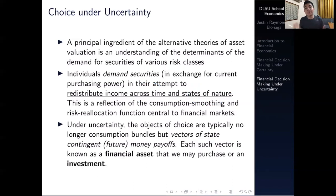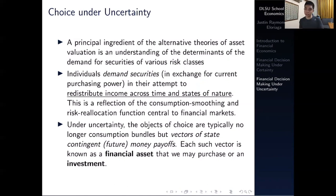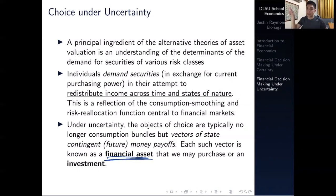Under uncertainty, the objects of choice are typically no longer consumption bundles as we had under certainty — consumption streams across different periods. In reality, they're vectors of state-contingent future money payoffs. Each vector is a financial asset we may purchase, and the vector represents the different potential outcomes of that investment at different states of nature. What would be the value of this investment in a good environment? What would be the value in a low investment environment? That's how you should picture it.